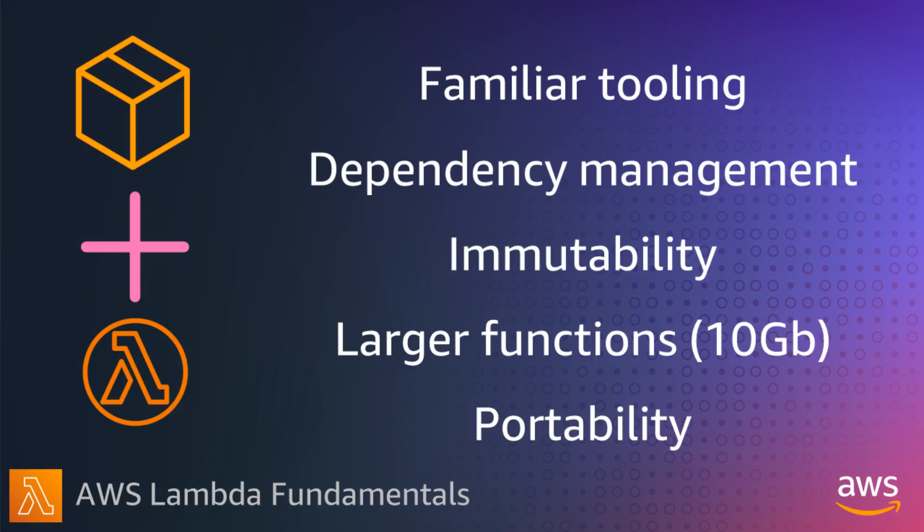You get to use your familiar container tooling that you already have in your container world to build Lambda applications. This includes tools like the Docker CLI, your build and CI/CD pipelines, container security scanning and other governance tools. Dependency management works the same as other container systems. You build an immutable artifact from a Dockerfile where you manage all your dependencies to build your images exactly the way you like them. You can also use your preferred Linux base image, not only Amazon Linux.